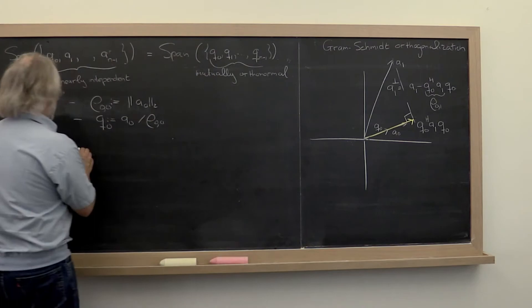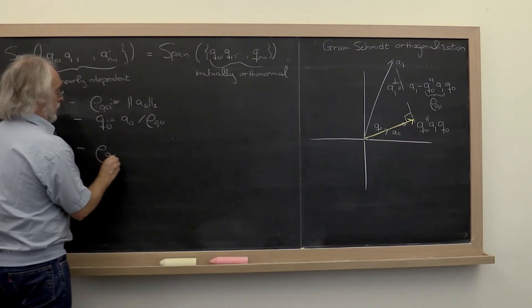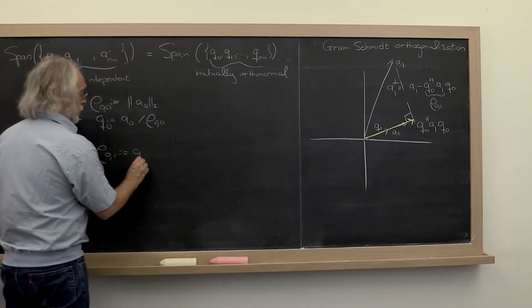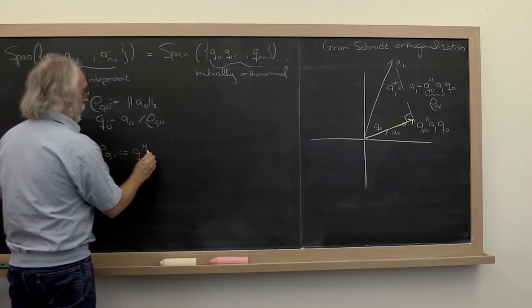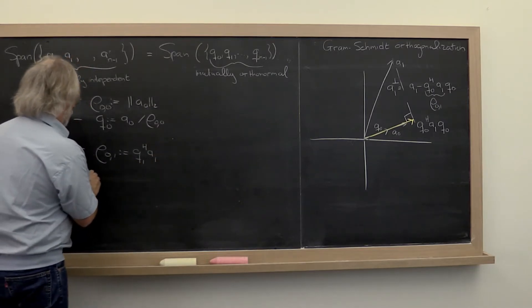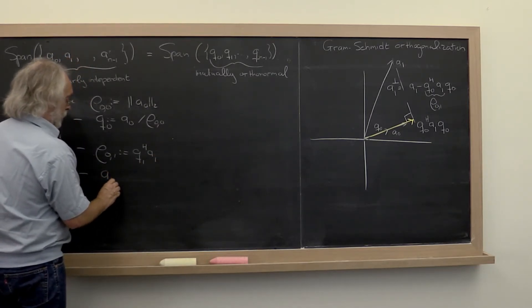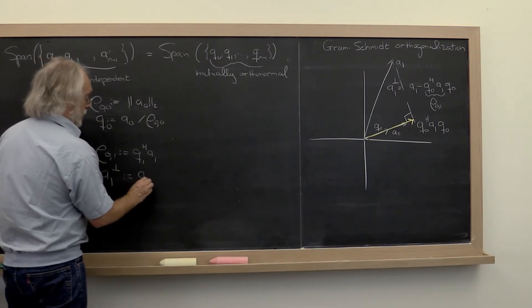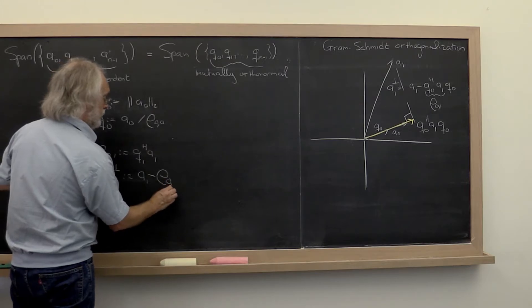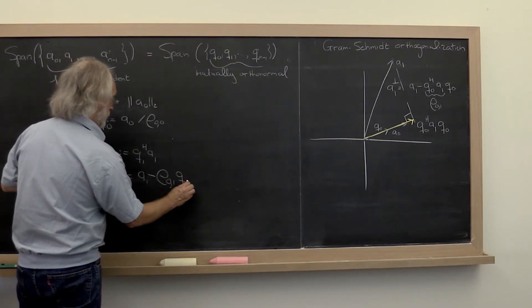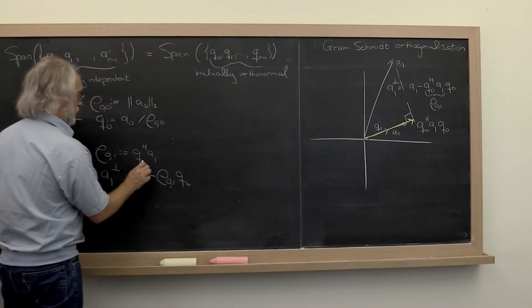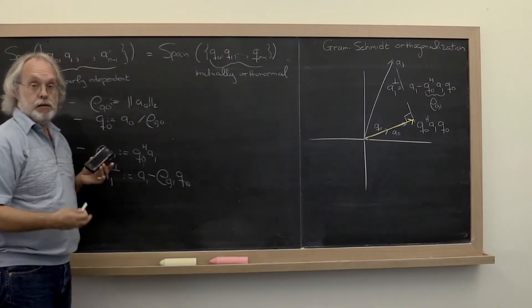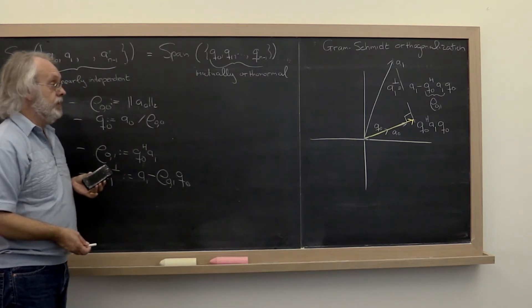So now we have that we compute rho(0,1) as the dot product of q1 with a1. And then we compute a1 perpendicular as a1 minus the component in the direction of q0. This should be q0.